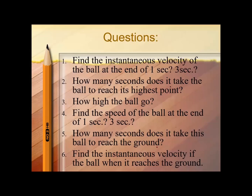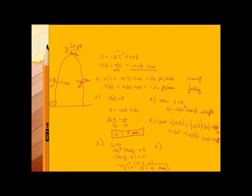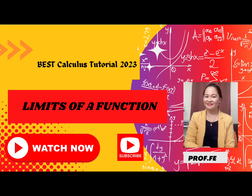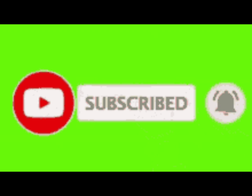Question six: find the instantaneous velocity of the ball when it reaches the ground. We substitute t = 4: V(4) = −32(4) + 64 = −64 feet per second. So the instantaneous velocity when the ball reaches the ground is −64 feet per second. For your assignment, answer the following activity. We hope you found this video helpful — if you have any questions, leave them in the comments below, and don't forget to subscribe for more videos.